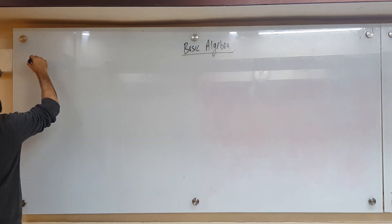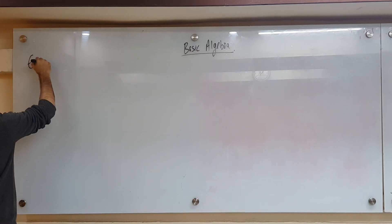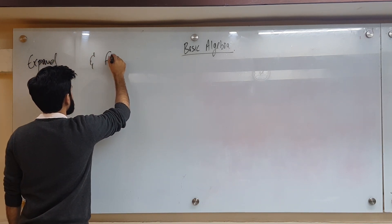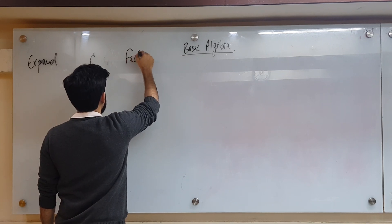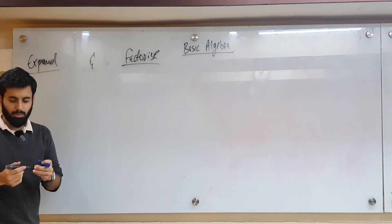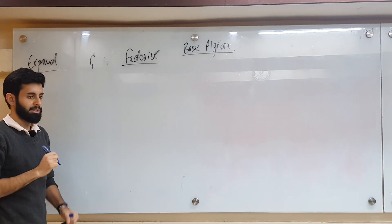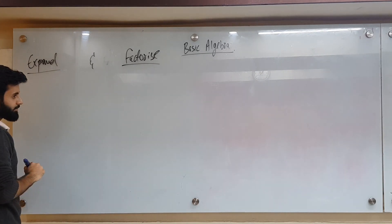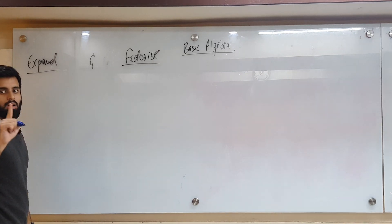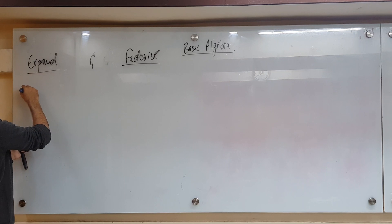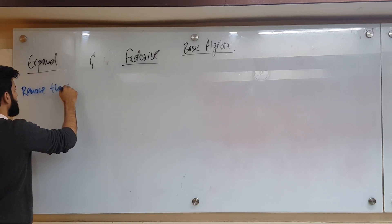We're doing basic algebra, so pay attention. The first thing we need to learn is the difference between expand and factorize. Any idea what we do when we see expand, and what we do when we see factorize? In short, when you see the word expand, that basically means you have to remove the brackets.